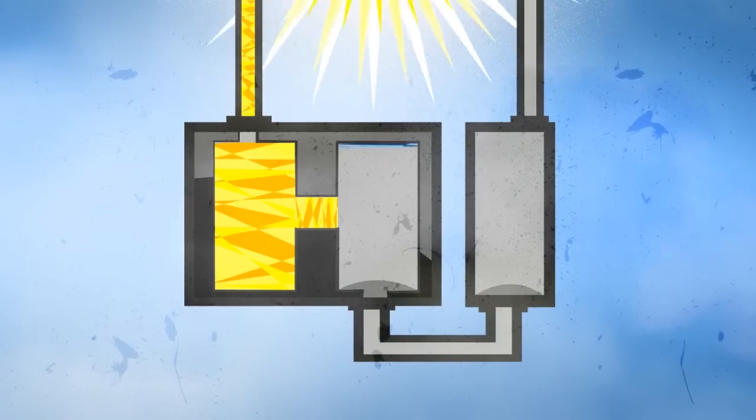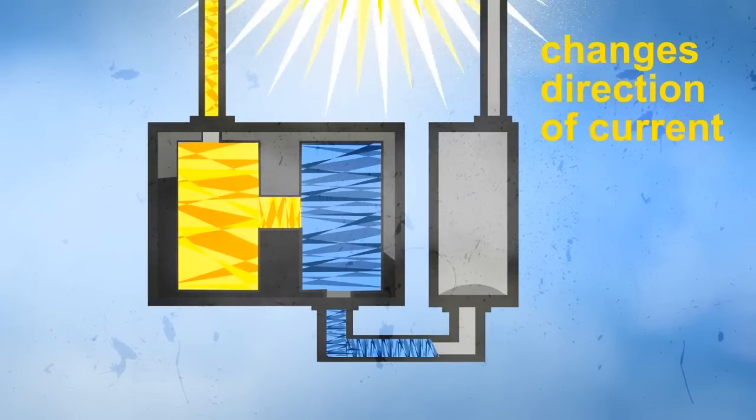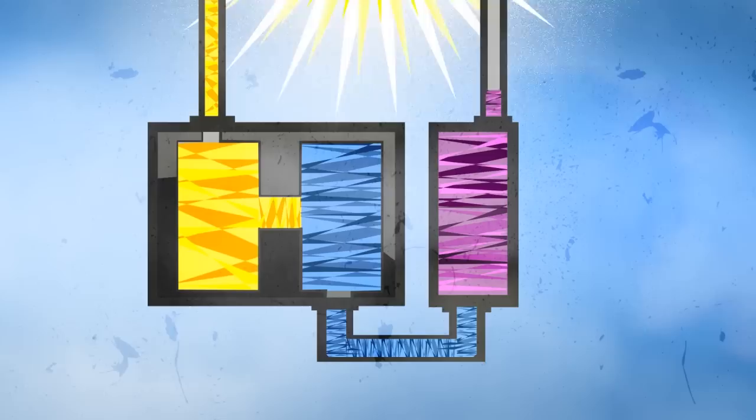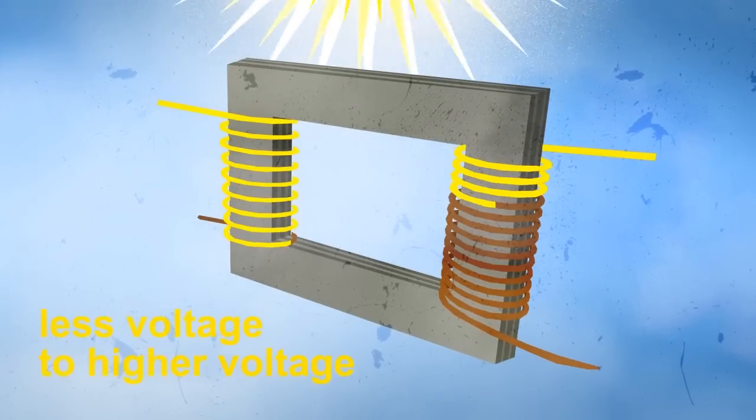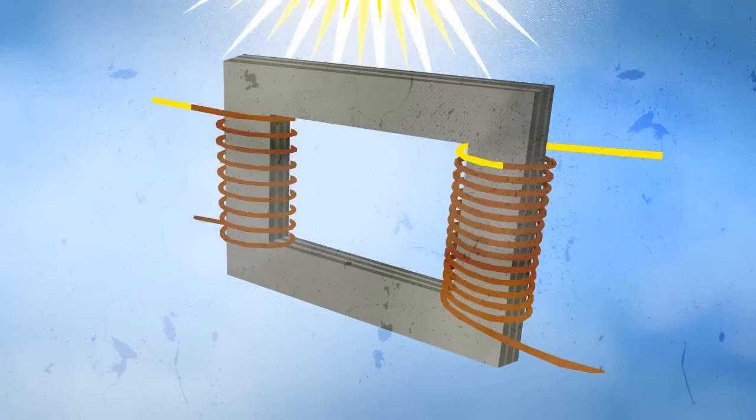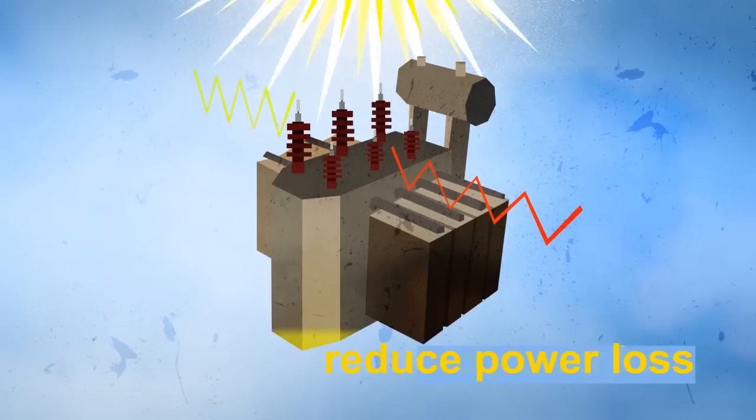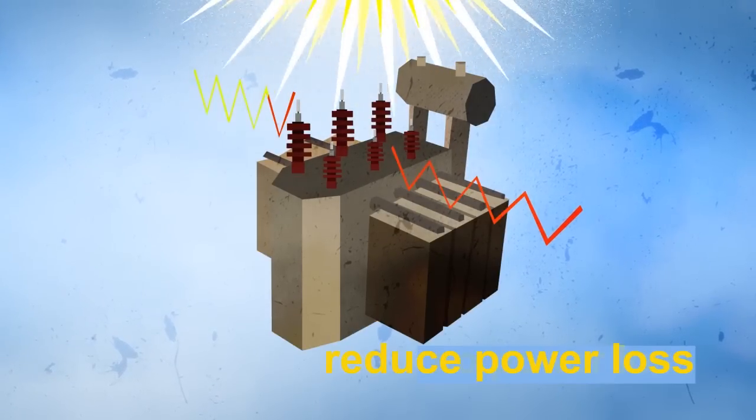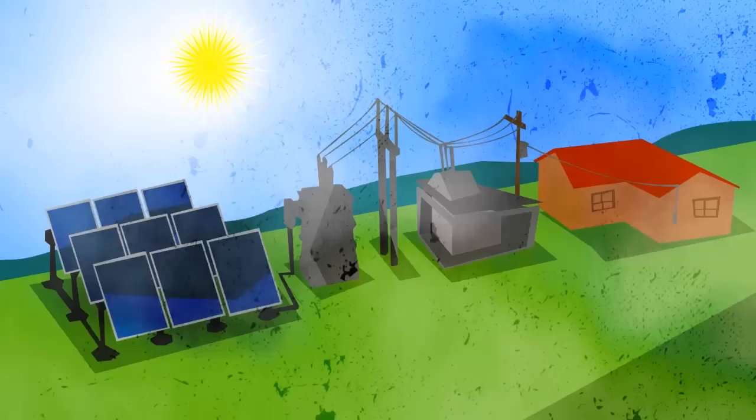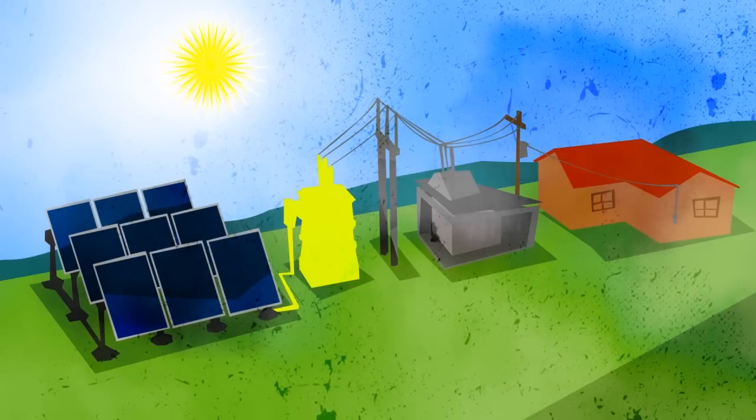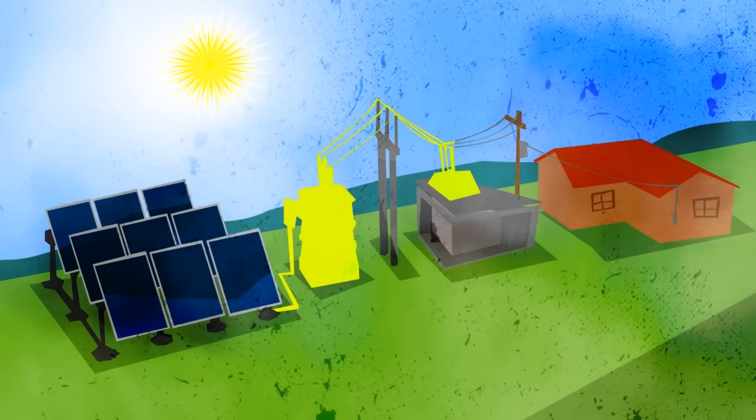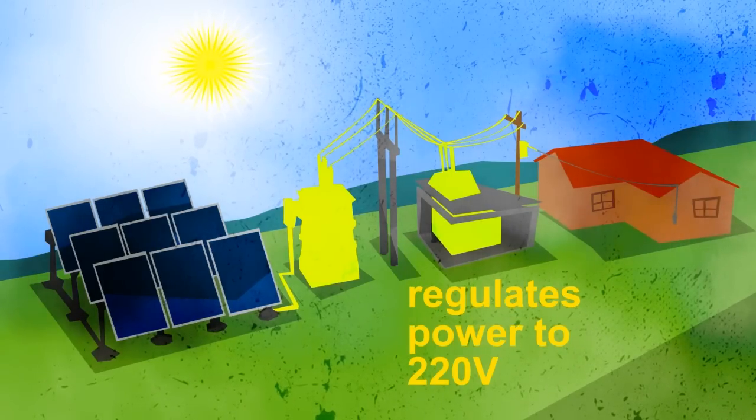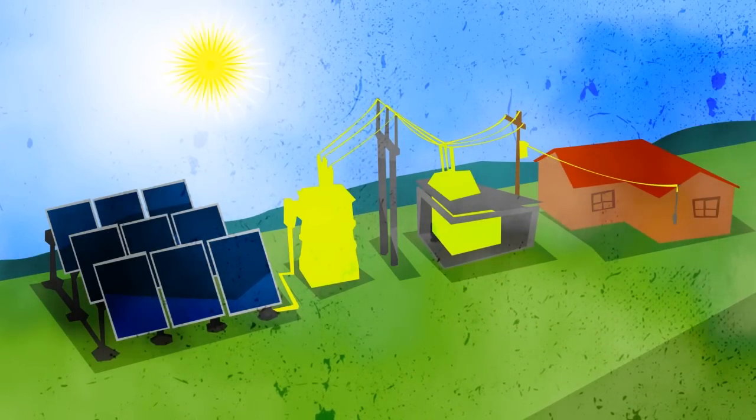The inverter converts the single current direction of DC electricity to multiple directions of alternating current or AC. The electricity then flows to the transformer and boosts it to 13,800 volts to reduce power loss when electricity is transmitted to far distances. From the transformer, electricity flows to a substation. This regulates electricity to usable 220 volts using another transformer and distributes power to homes.